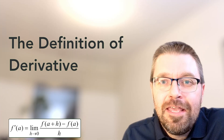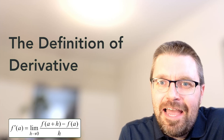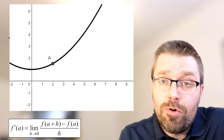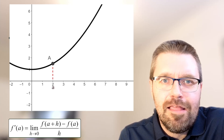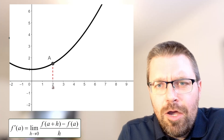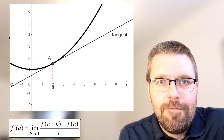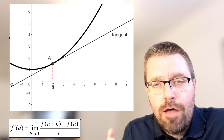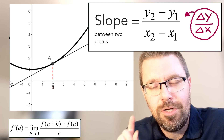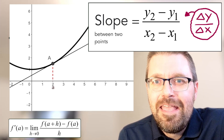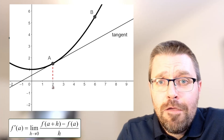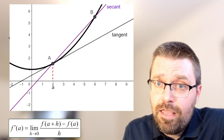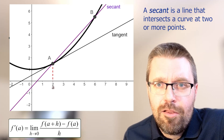To really understand why the definition looks exactly like this, I need to show you something more interactive. We have a coordinate system with a graph and a point on the graph. We call the point big A. The x value of big A is little a. The slope of the tangent line is the derivative, but I can't measure the slope if I only have one point. I know how to measure a slope for a straight line between two points but not for only one point. So the key thing is to put in an extra point on the graph and draw a line between both points. This line is not called a tangent — it's called a secant. And the slope of the secant is not the same as the slope of the tangent.